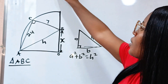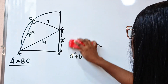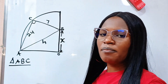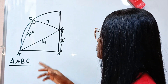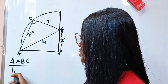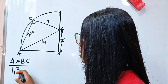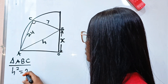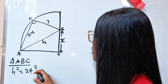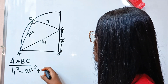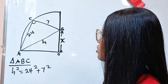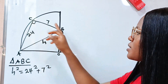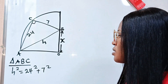So for triangle ABC, H squared is equal to 24 squared plus 7 squared — that is AC squared plus CB squared.